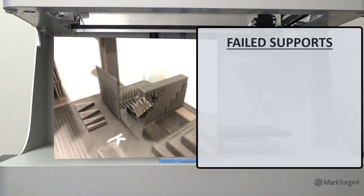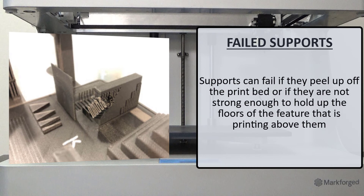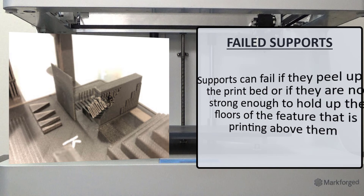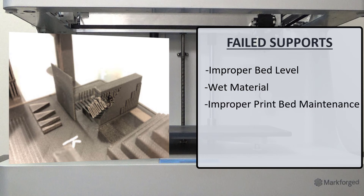What should we do if we have failed supports? Supports can fail if they peel up off the print bed or if they are not strong enough to hold up the floors of the features that they are printing above. Support failure usually means print failures, but sometimes a print can finish successfully even if the supports fail. Some common causes for this issue could be improper bed level, wet material, improper bed maintenance, or part geometry and orientation.